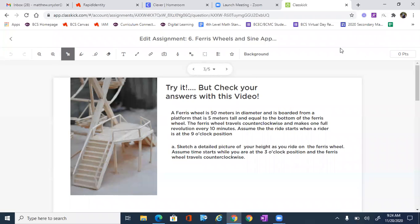Hey y'all, this is sine application and Ferris wheels. So a Ferris wheel is 50 meters in diameter and is boarded from a platform that is five meters tall and equal to the bottom of the Ferris wheel. The Ferris wheel travels counterclockwise and makes one full revolution every 10 minutes.